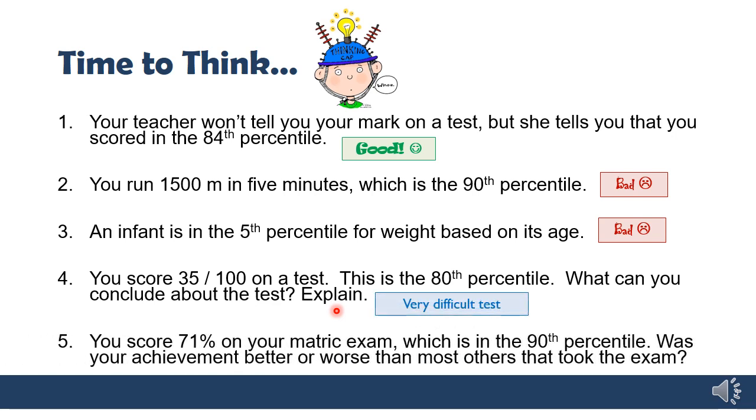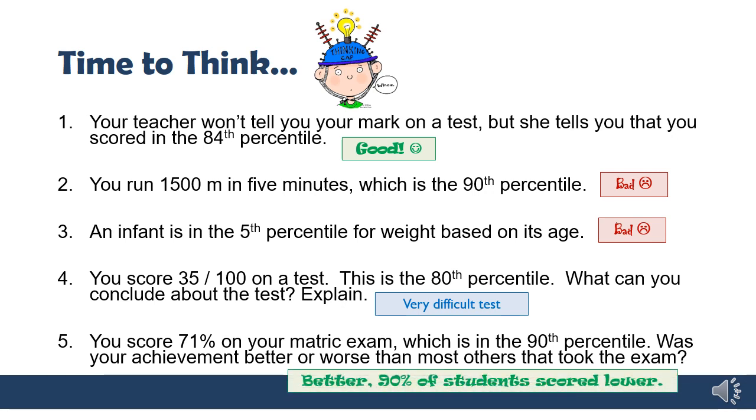Last one. You score 71% on your matric exam, which is in the 90th percentile. Was your achievement better or worse than most others that took the exam? Even if you're not happy with the 71% score, if it's in the 90th percentile, that means you're doing better than 90% of the people who took the exam. So that's pretty good.